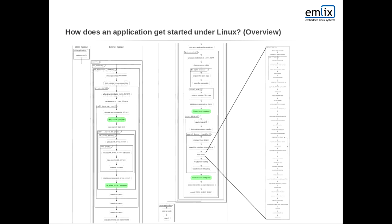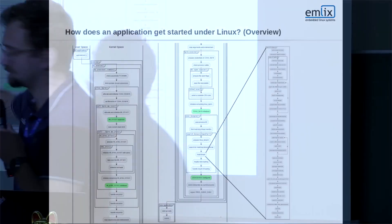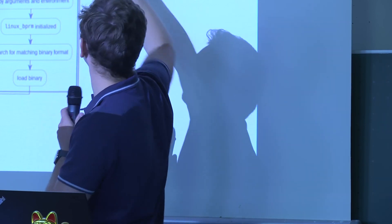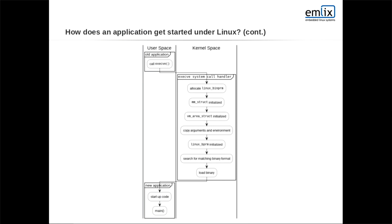Once we have a process to start, we enter the Linux kernel. There's a whole lot going on — we enter from user space via the execve call, go into kernel space, and then down here we load our actual binary. Simplified for readability: we enter, allocate the binary program struct and mm structs for memory layout, allocate kernel memory, look at arguments and environment, initialize our struct, search for a matching binary format, load the binary, execute startup code, and return to start executing main.